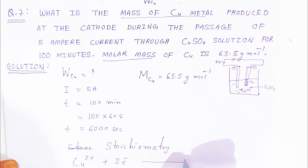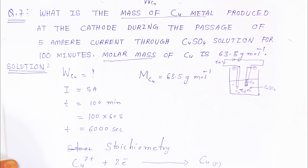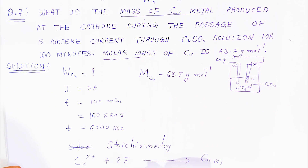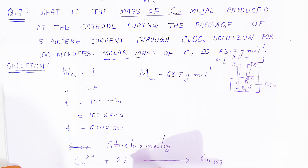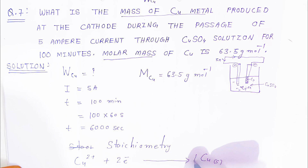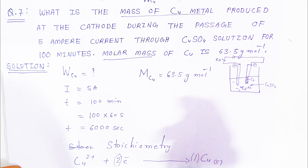Cu²⁺ accepts two electrons and converts into copper solid. When finding the mole ratio — how much copper is deposited at the cathode — for one mole of copper deposition you require two moles of electrons. From this reduction half-reaction, the mole ratio is: 1 mole of copper in the numerator and 2 moles of electrons in the denominator.